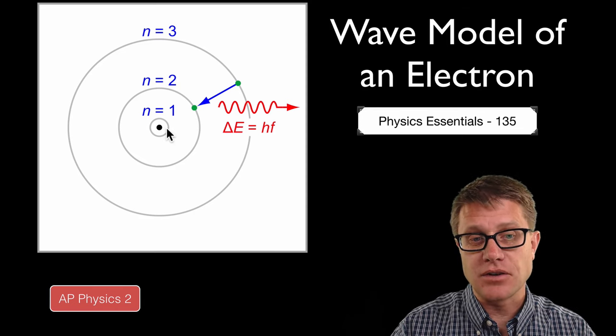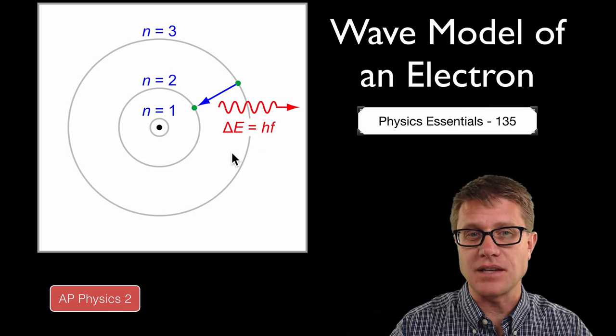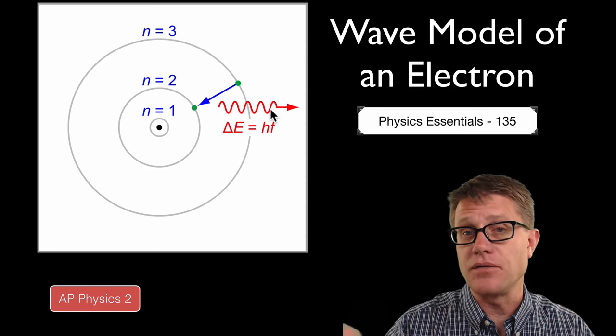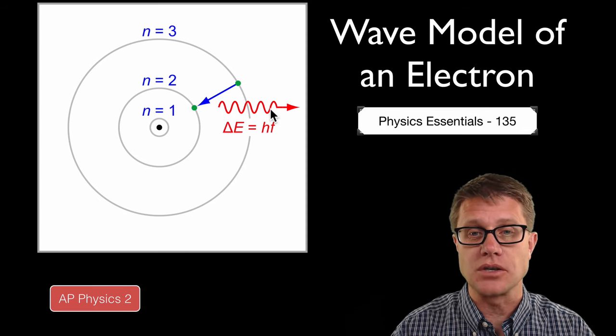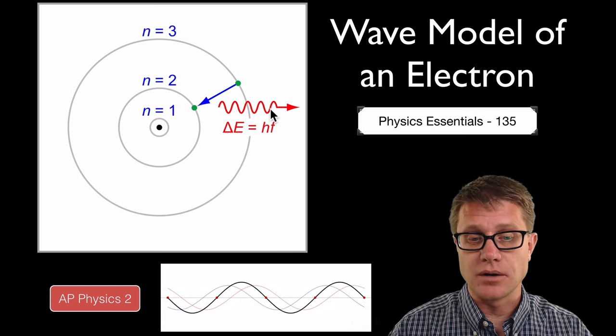And so we realized that electrons could be here or here or here but they did not exist in the middle and that was puzzling to scientists. Also why is it when an electron falls down it emits a photon of light, a certain amount of energy? Well the wave model unlocked that because we have a good understanding of how waves work.